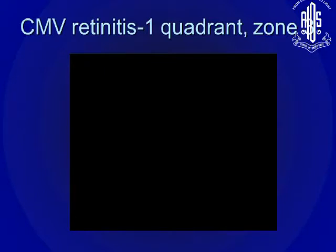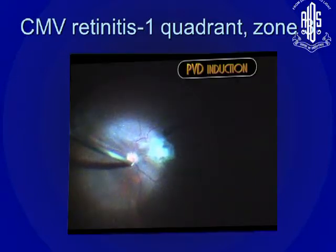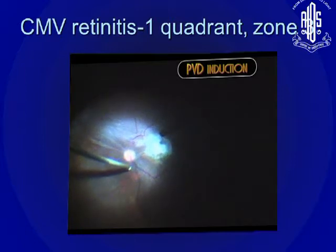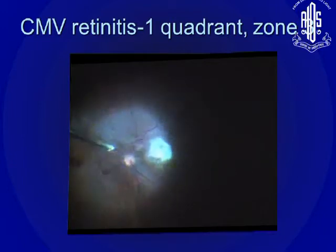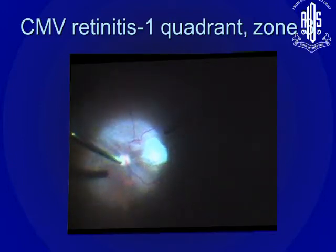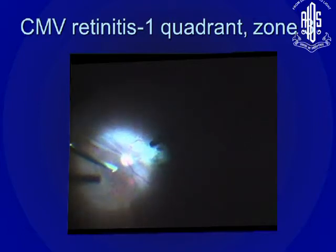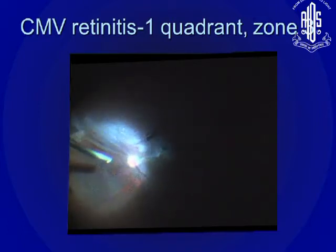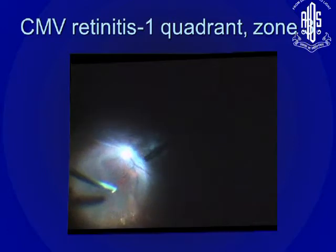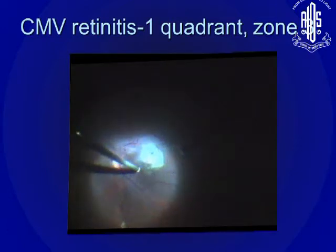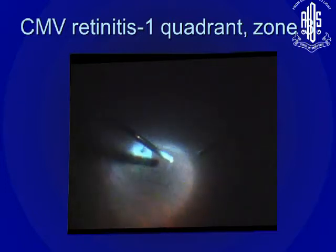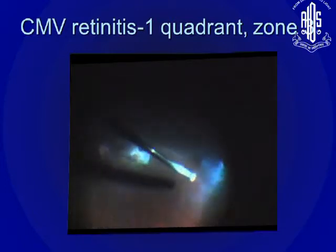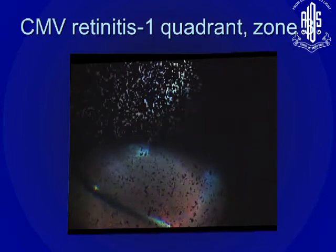Typically, it is a good case to operate on. You have CMV retinitis in Zone 1 to Zone 3, one single quadrant, with a thickened epiretinal membrane as well. PVD has to be induced — in this case usually you won't see a PVD. The important part is that you need to get the PVD up to the atrophic retina, because beyond that you just cannot get it. Attempting to get PVD beyond the atrophic retina can cause large breaks. So you don't have to induce PVD beyond the atrophic retina — you can actually cut off the atrophic retina.